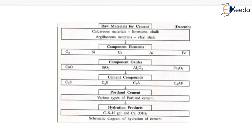This is the flow chart of the hydration process. The raw materials for cement are calcareous material — that is limestone and chalk — and argillaceous material — that is clay and shale. The component elements are oxygen, silica, calcium, aluminum, iron, etc. Component oxides are CaO (calcium oxide), silica oxide, aluminum oxide, iron oxide, etc. The cement compounds are C3S, C2S, C3A, and C4AF, from which Portland cement is formed. When Portland cement reacts with water, it forms CSH Gel, and this CSH Gel is responsible for the hydration process.